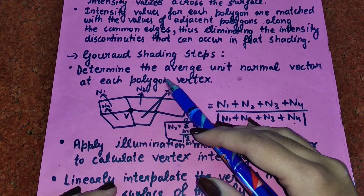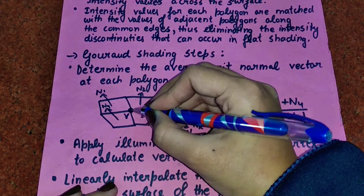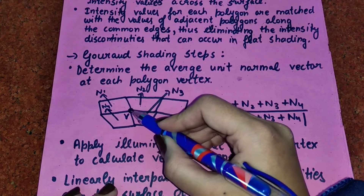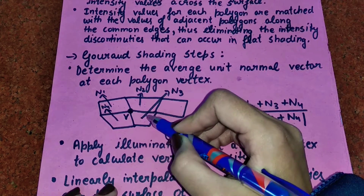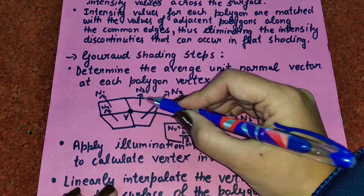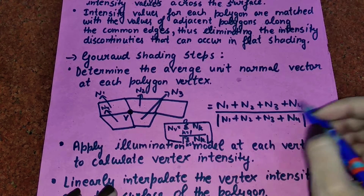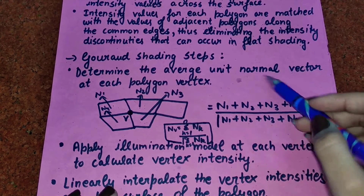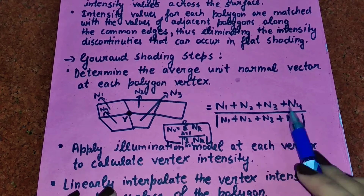The first step is to determine the average unit normal vector at each polygon vertex. For example, looking at a diagram vertex, the polygons connecting with that point — say polygon N1, N2, N3, and N4 — contribute their normals. The average unit normal vector is calculated as: (N1 + N2 + N3 + N4) / 4.